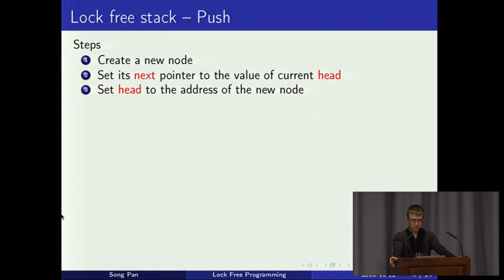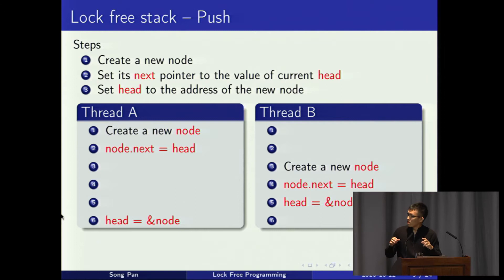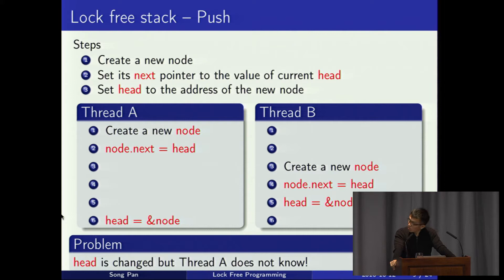This will have problems if different threads execute it simultaneously. Suppose two threads each try to execute push. Thread A completes the first two steps — creates a new node pointing to the current head — then gets preempted. Thread B runs and finishes its push, so head now points to B's node. Then thread A resumes and sets head to the address of A's node. However, from the stack's perspective there is no reference to the node B just created, so that node is effectively lost.